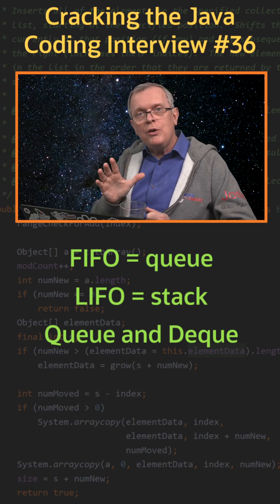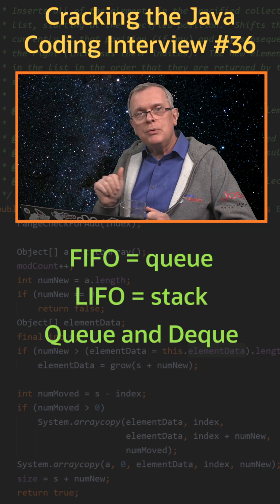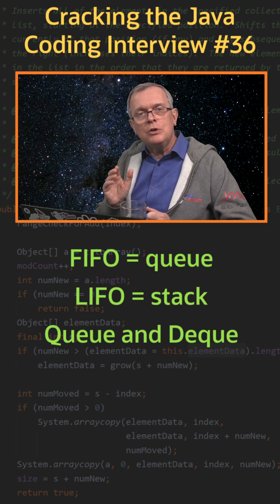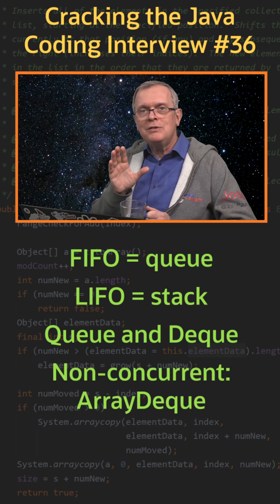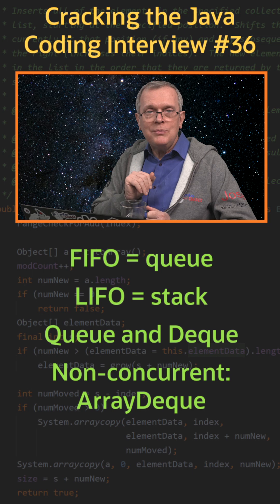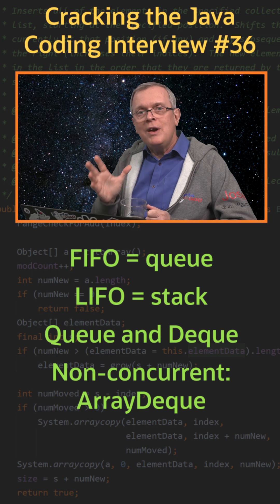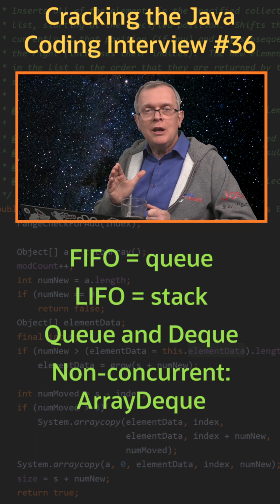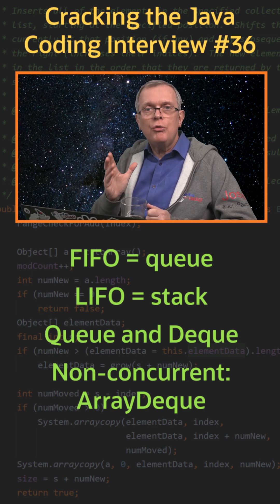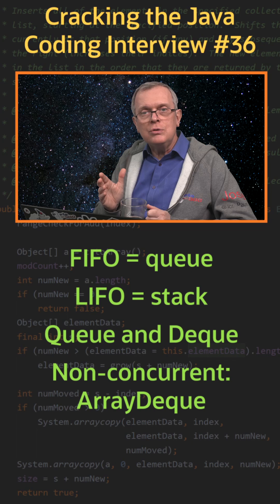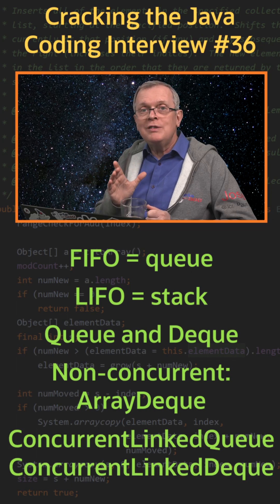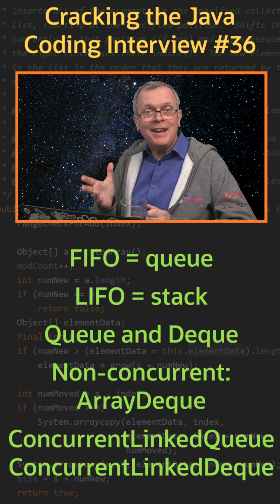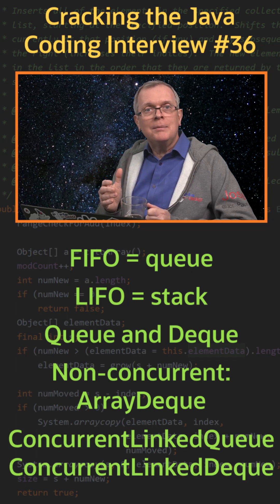The preferred implementation for both of these interfaces is ArrayDeque, but it's not thread safe. If you need a thread safe implementation, you can use ConcurrentLinkedQueue for Queue or ConcurrentLinkedDeque for Deque.